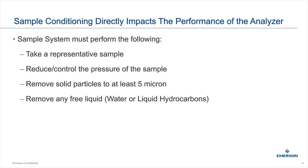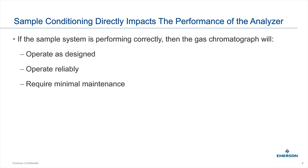Fifth, if you accomplish the above four items, maintaining the composition of the sample becomes much easier — though you still have to be careful about hydrocarbon dropout when changing pressure, which can affect temperature. If we get the sample handling system right, the GC will operate as designed, operate reliably, and require minimal maintenance.